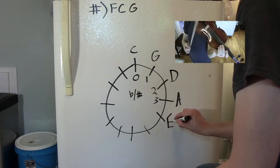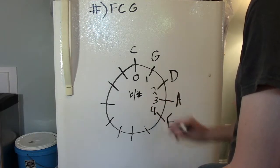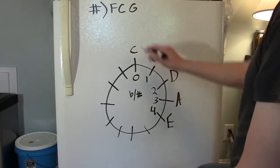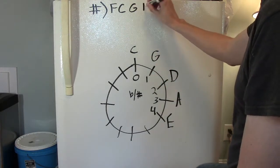As we travel up our circle by perfect fifths, we arrive at our next key, E major. E major has four sharps, which are F, C, G, and D.